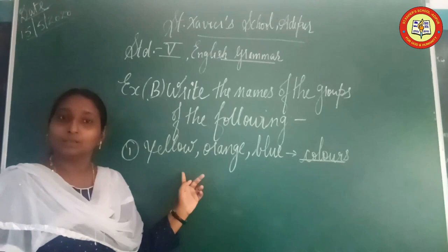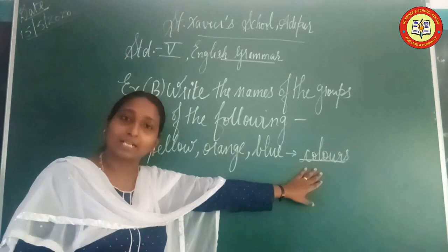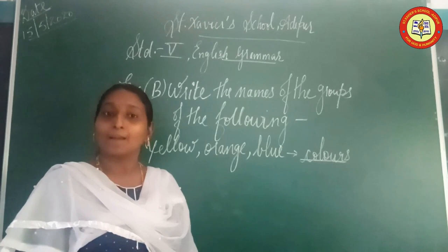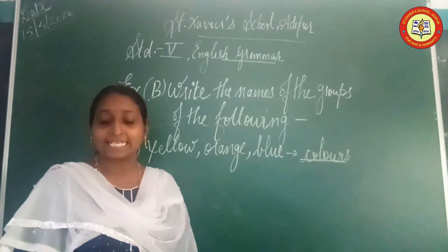Exercise B: Write the name of the group for the following. The example given: Yellow, Orange, Blue — group of Colors. Second: Peacock, Woodpecker, Eagle — group of Birds. Third: Football, Hockey, Badminton — group of Games.